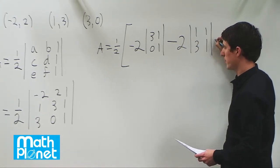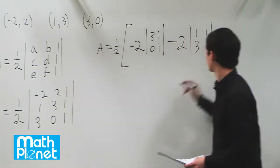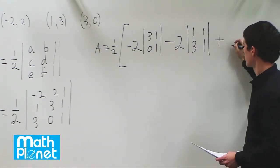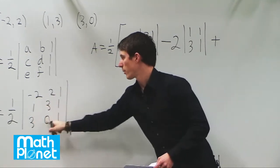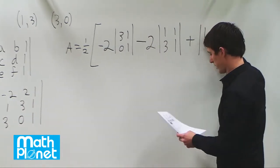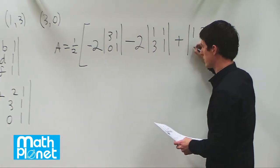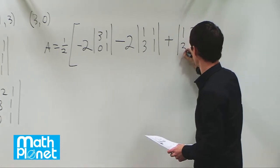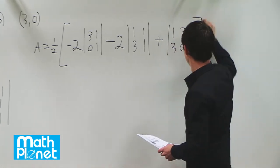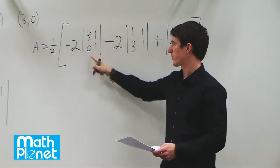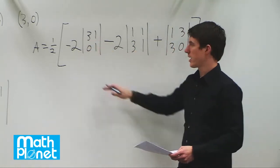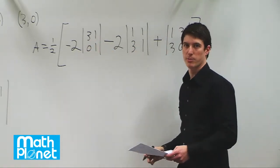And then finally plus what we have here, so plus 1, times this determinant, what we have here. So that's 1, 3, and 3, 0. So then we need to figure out what each of these is in turn, and then we can actually finally solve this arithmetically.